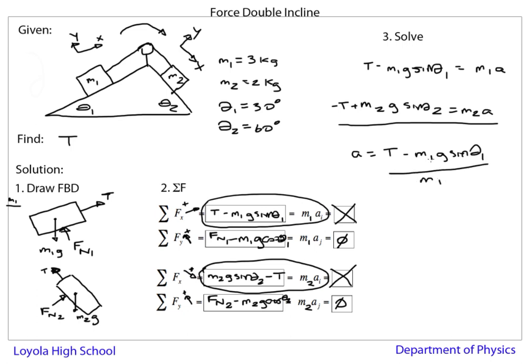This is where the subscripts and the m's become very important because I'm going to have lots of m flying around here. Then if I plug this back in here, I'm going to get minus T plus m2 g sine theta 2 equals m2 times this: T minus m1 g sine theta 1 over m1. So now I have one equation and T is the only unknown, and now I can solve for T.